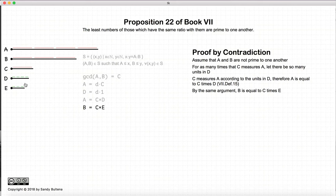Using the same argument, we can find the number E such that B is equal to C times E. So C measures B three times, the unit 1 measures E three times, so therefore C times E is equal to B.